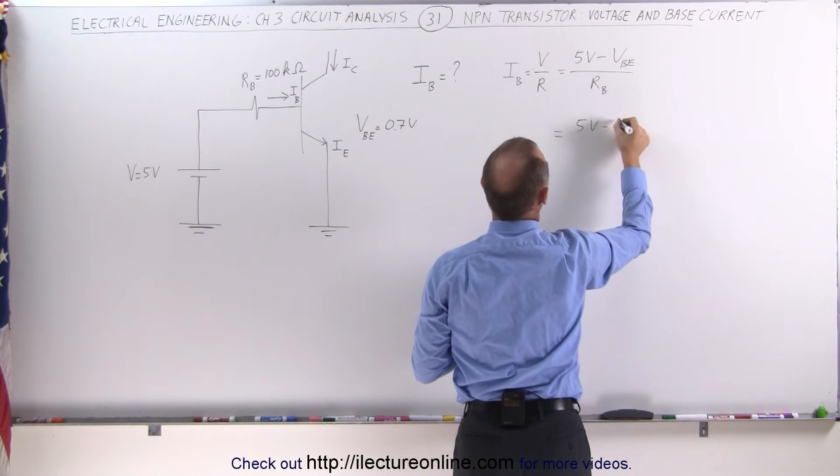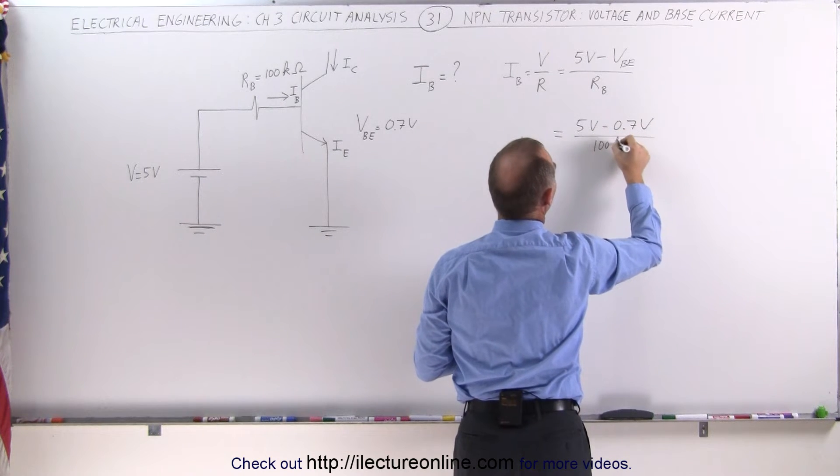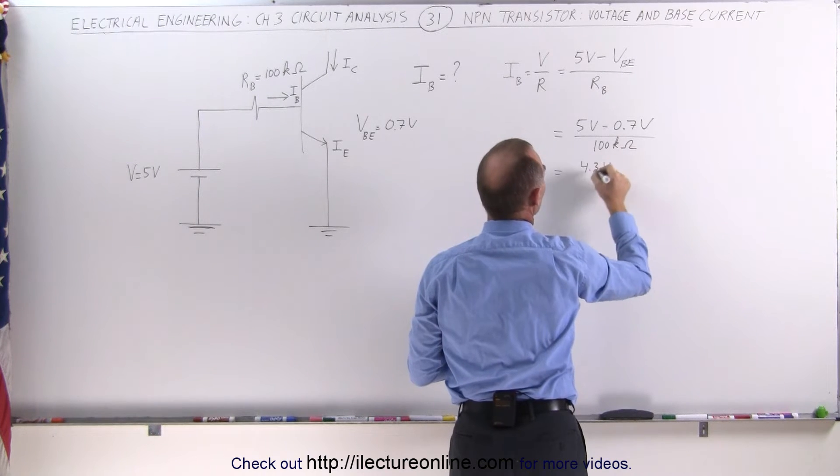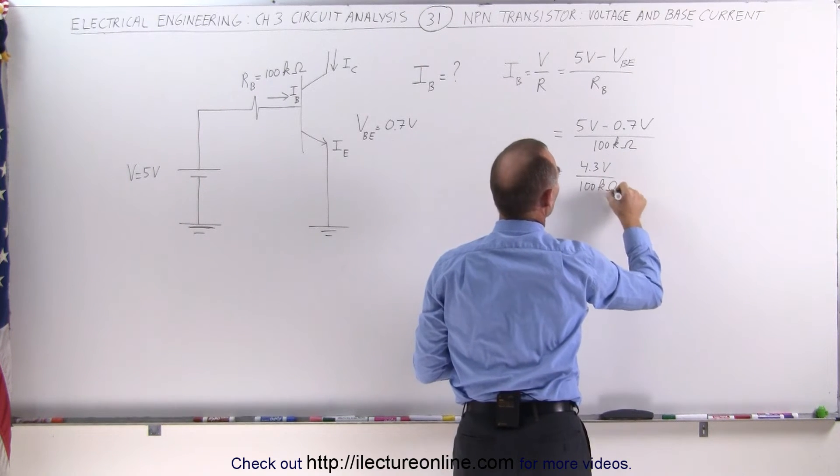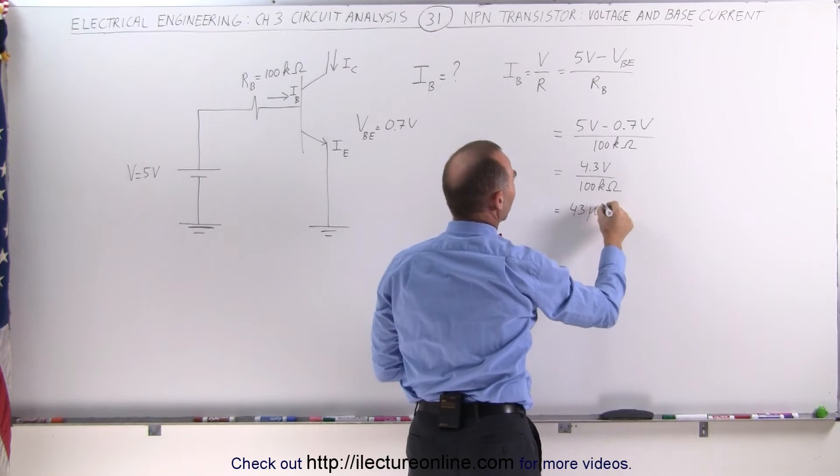So in this case, that's equal to 5 volts minus 0.7 volts divided by 100k ohms, or this is equal to 4.3 volts divided by 100k ohms. Now that is going to be equal to 43 microamps.